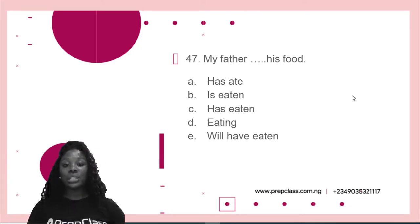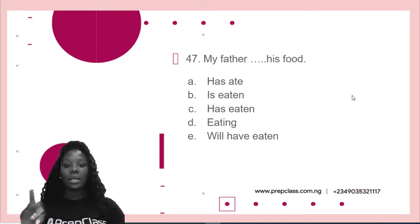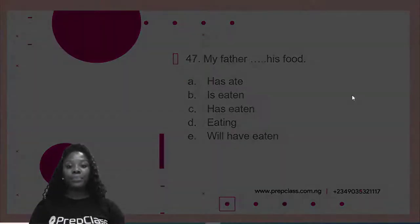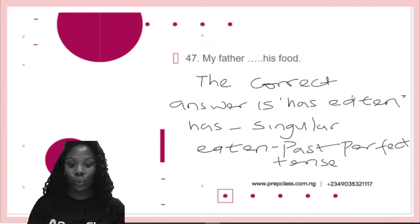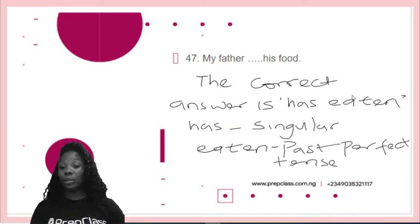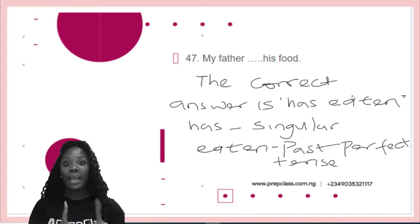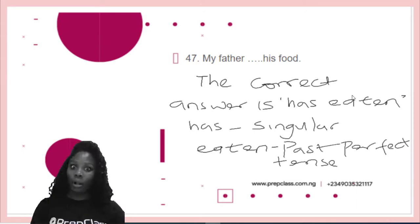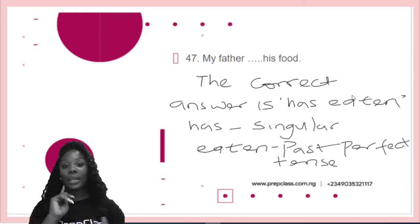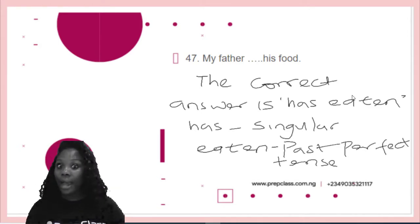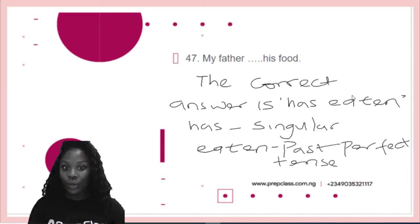For the 47th question: my father dashed his food. Option A: ate. Option B: eaten. Option C: has eaten. Option D: eaten. And option E: will have eaten. Which is correct? My father has eaten his food. Now, has shows singular — it's a singular form because it's just my father, one person. Has, not have. Have is for plurality. So, we choose eaten — E-A-T-E-N — because it's the past perfect tense.